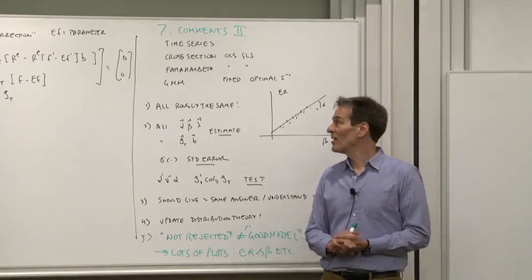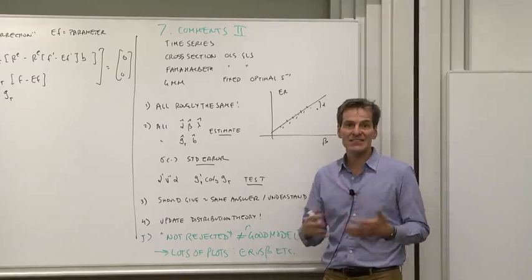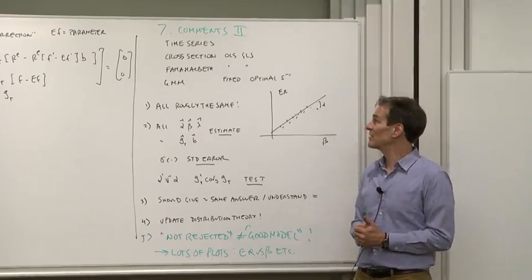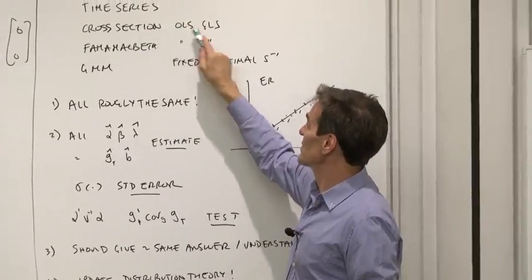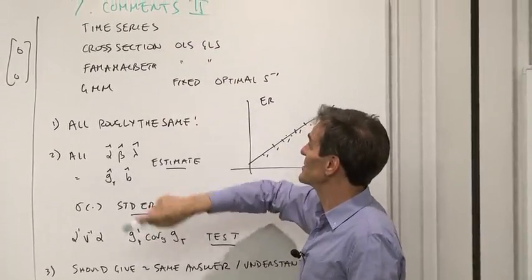So let's wrap up what we've done so far. We've looked at how to estimate the standard linear factor models using a bunch of techniques: time series regression, cross-sectional regression, either OLS or GLS, which turned out to be the same thing as time series.